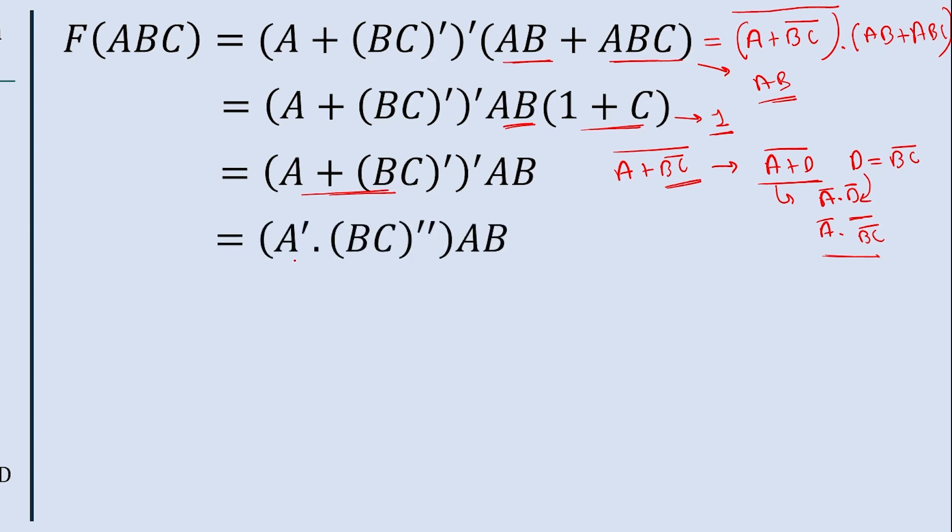So the simplified equation looks like this: A bar into BC double bar into AB. Now this double bar of BC is simply equal to BC. So if we take simply BC and multiply this AB with this term, we will get A bar into BC into AB.